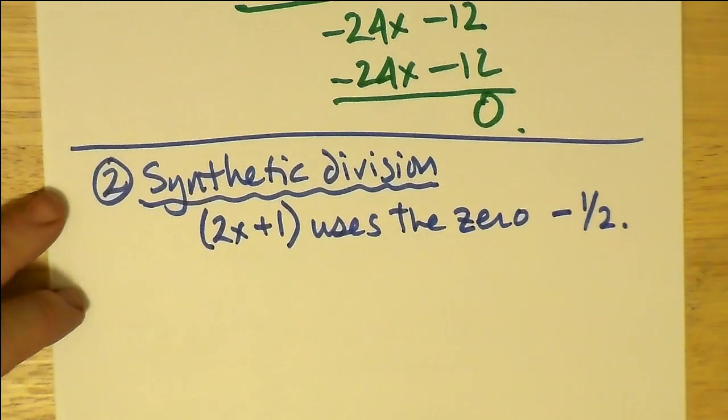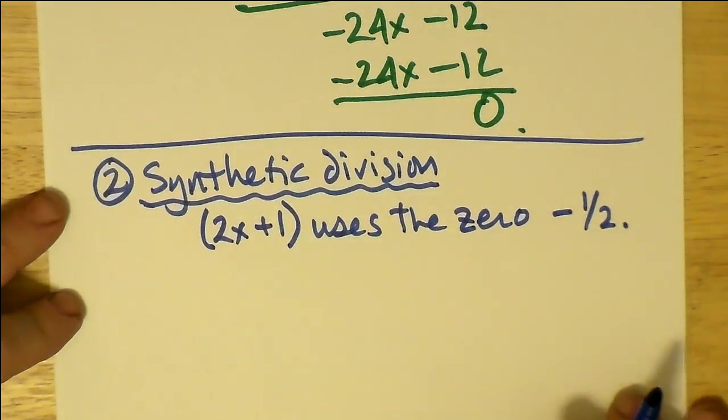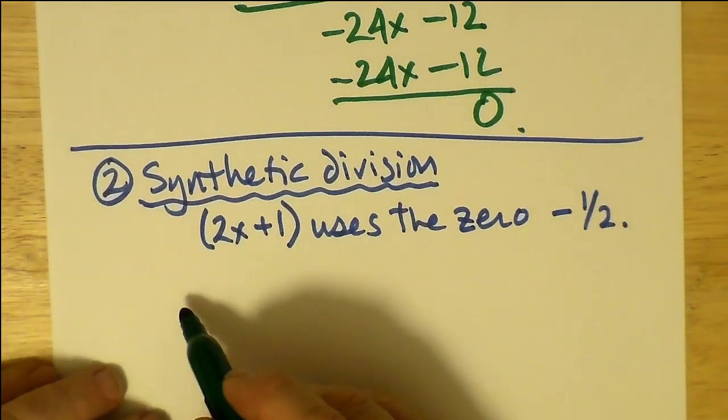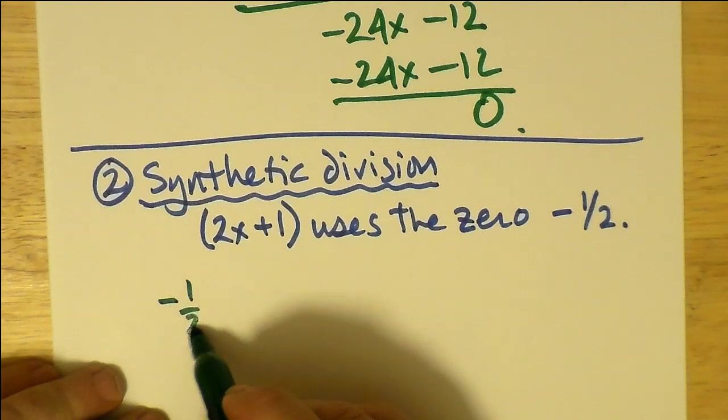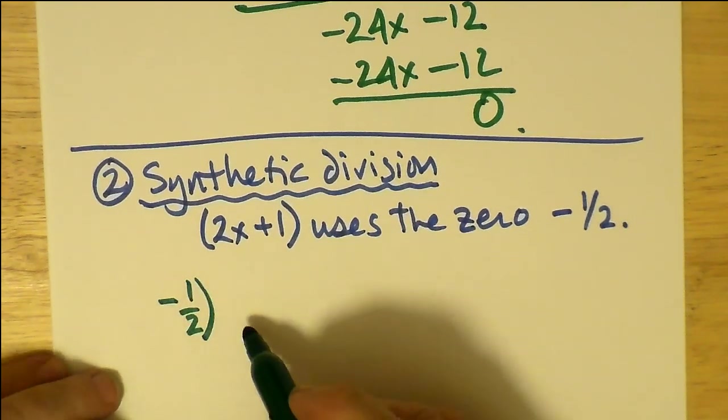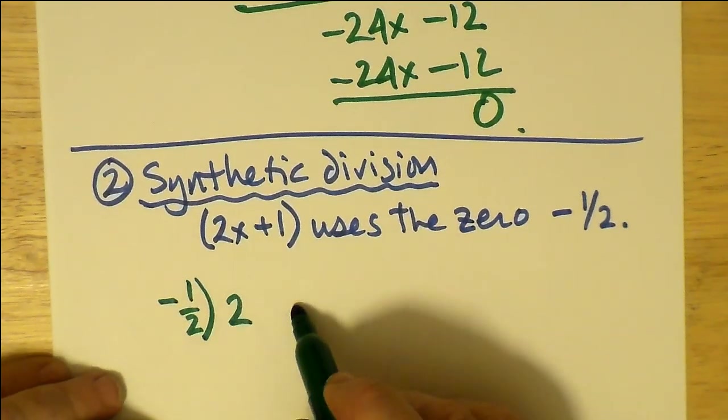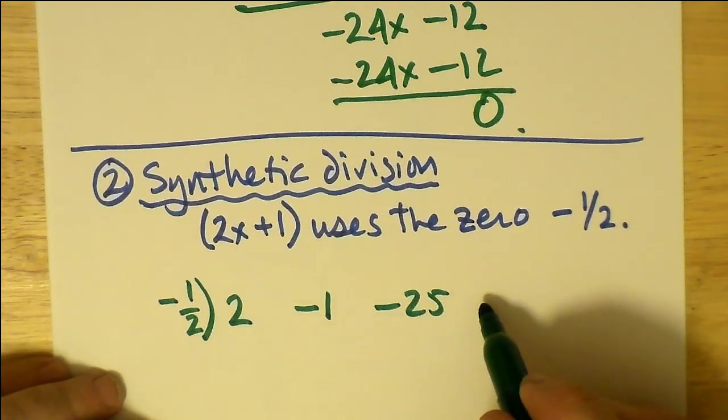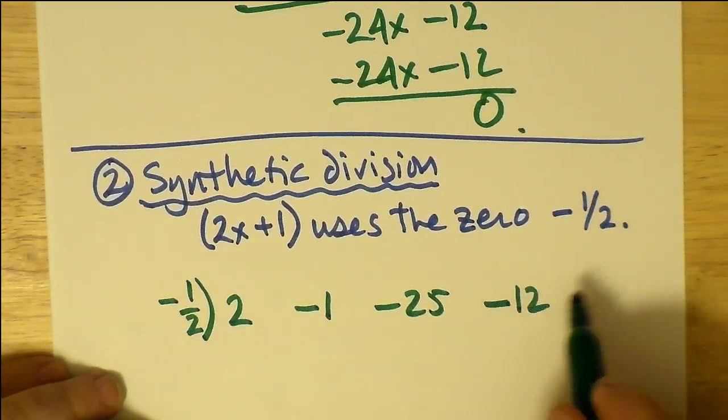So 2x + 1 uses a zero of -1/2. As you know from synthetic division, we have to use the zero, so -1/2 becomes what we divide into. Remember that instead of subtracting as you do in normal division, you add, which is actually less error prone.